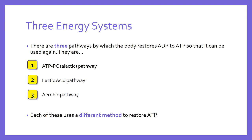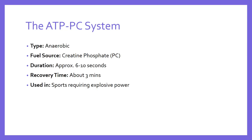This video will concentrate on the first one: the ATP PC pathway. Some of the key features of this system are, first of all, that it is an anaerobic system — that is, it does not require any oxygen in order to resynthesize ATP. No oxygen is needed. Secondly, the fuel source used to resynthesize ATP is creatine phosphate.